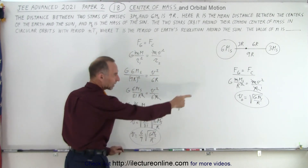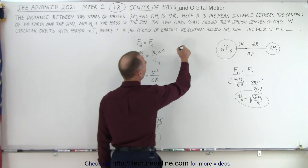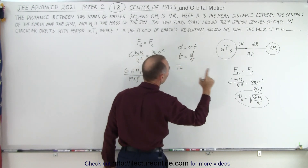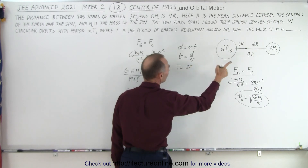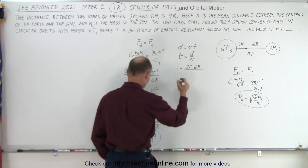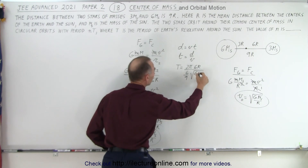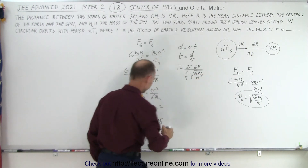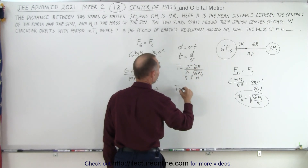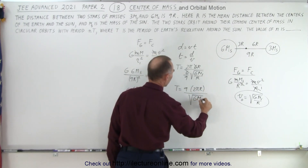Now we need to relate that velocity to the period. Using time equals distance over velocity, the period of the small star equals the circumference of its orbit — 2π times 6r — divided by the velocity, which is (6/9)√(G·M_s/r). The 6 cancels, and the 9 moves to the numerator, so the period equals 9 × 2πr divided by √(G·M_s/r).